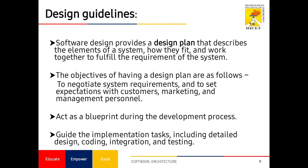Design guidelines are very useful for creating a software architecture and producing a good product. By following the guidelines, we assign attributes and create values to achieve the goal. The design plan consists of elements of a system, how they fit into the application, and how the system should work to fulfill requirements. Design guidelines also include implementation tasks such as detail design, coding, integration, and testing.